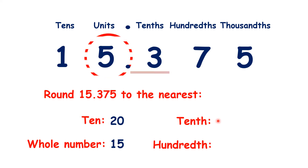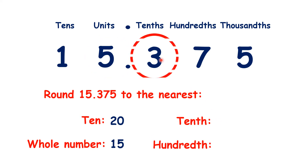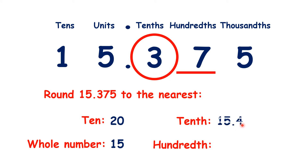To round to the nearest tenth, we find our tenths, look to the hundredths, and because we have 7 — because we have 5 or more — we know that we have to round up, so that's 15.4.